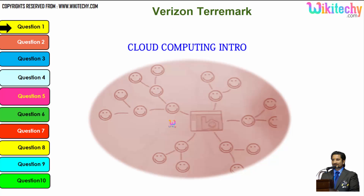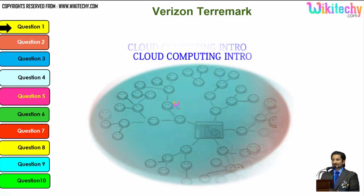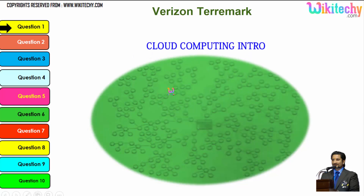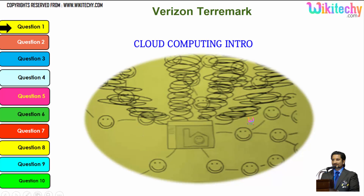Let's talk about the cloud computing intro. This is a computer connected to a server, and that server is monitoring this computer. Once the network becomes bigger, the monitoring becomes tougher. As more computers are added, the network grows larger, the monitoring system becomes really slow, and there is a possibility that the network crashes or the server couldn't monitor specific networks.